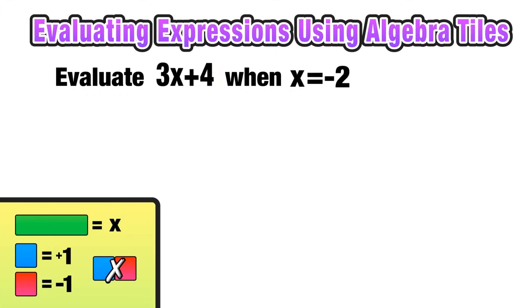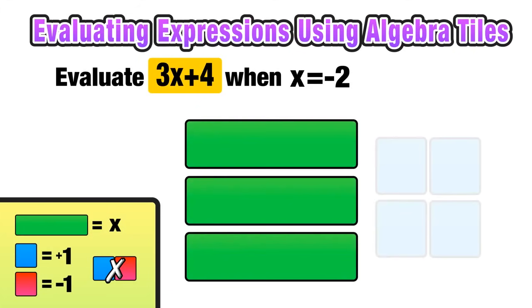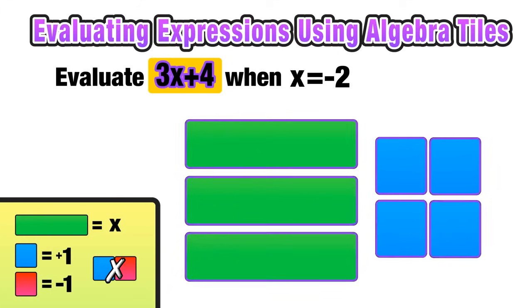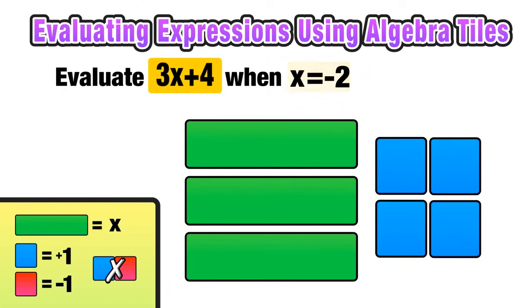Our next example says to evaluate the expression 3x plus 4 when x is equal to negative 2. So we want to go ahead and model that expression 3x plus 4 using algebra tiles. So we need 3 X's and 4 positive 1's. And now we have our model. Next, we know that x is the same thing as negative 2 since x equals negative 2.